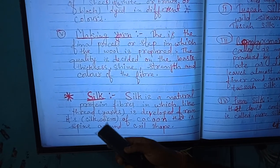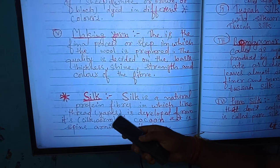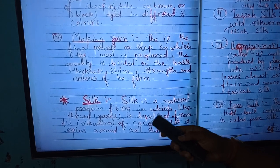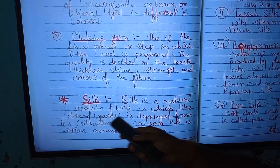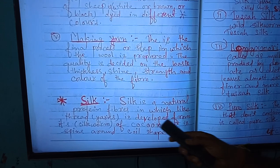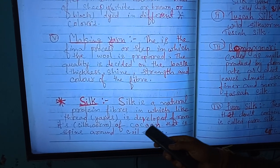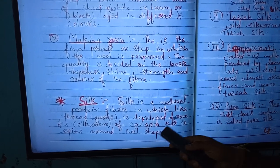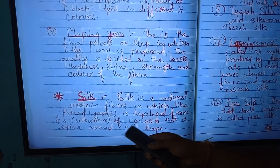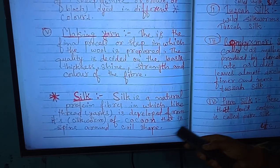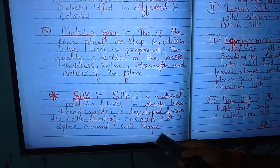My dear students, we are now going to talk about silk. Go through the definition. Silk is a natural protein fiber in which thread-like yarn is developed from the silkworm's cocoon that is spun around the coiled larva.